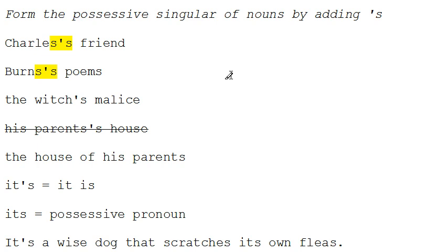Now this is the case whether the noun ends in a final consonant of s, or if it ends in a final consonant of h or k or l or whatever. The point is we always follow the rule that we add apostrophe s to the final consonant in order to form the possessive singular of the noun.